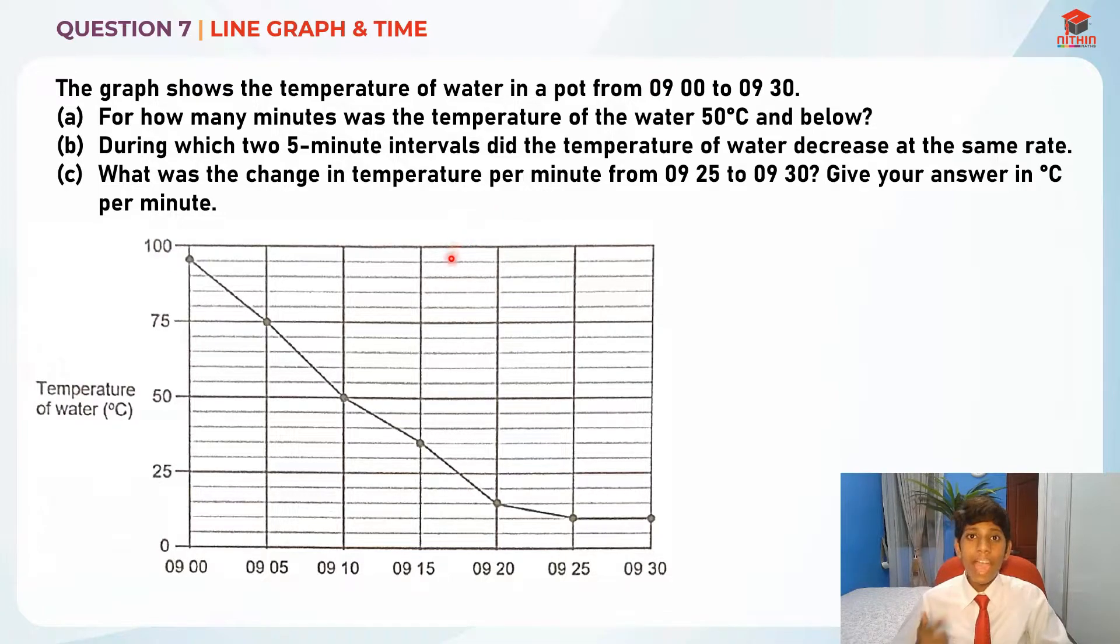Let's take a look at part A first. The graph shows the temperature of water in a pot from 9 o'clock to 9:30. For part A: for how many minutes was the temperature of the water 50 degrees and below?